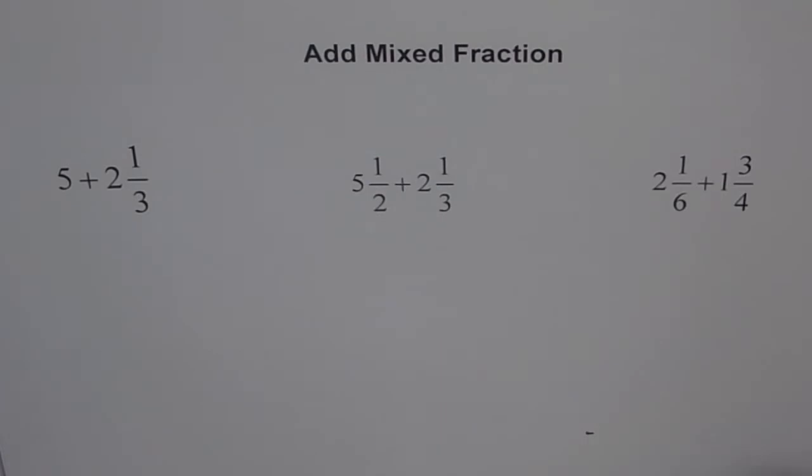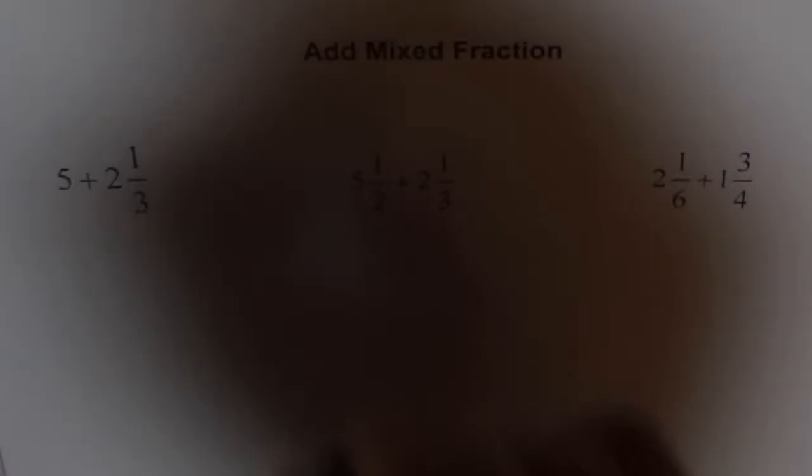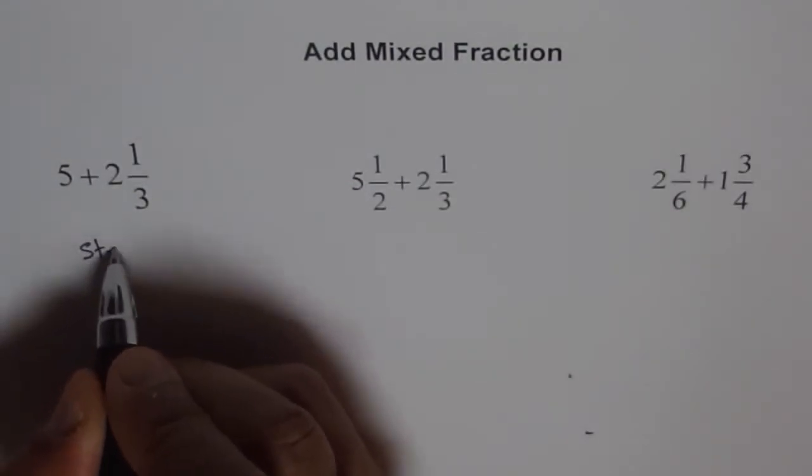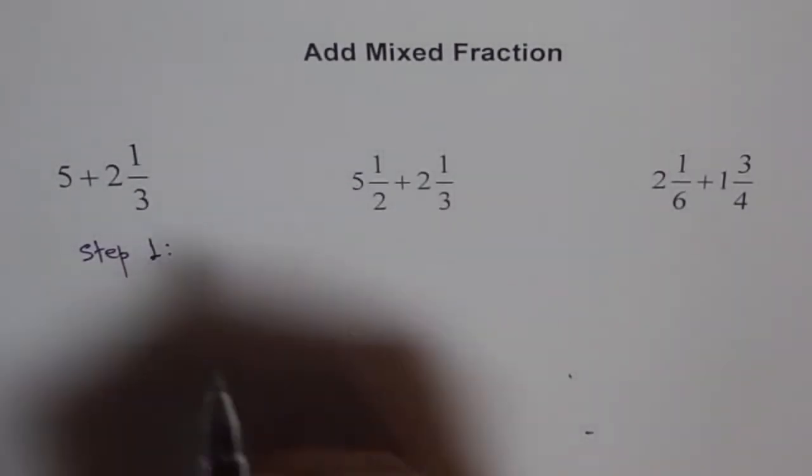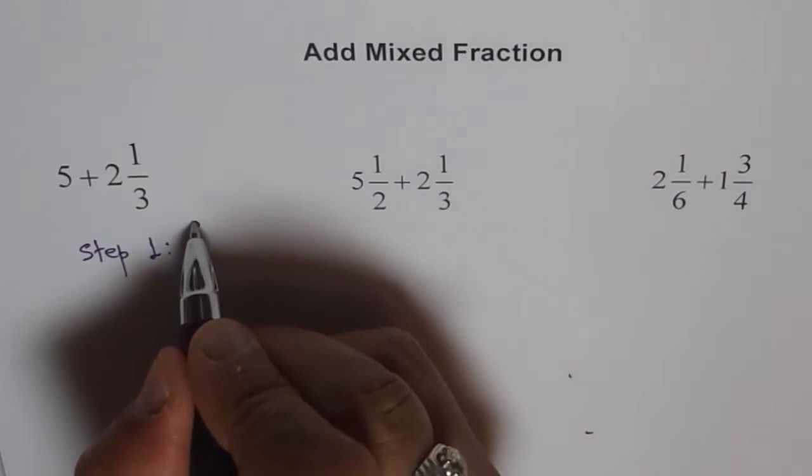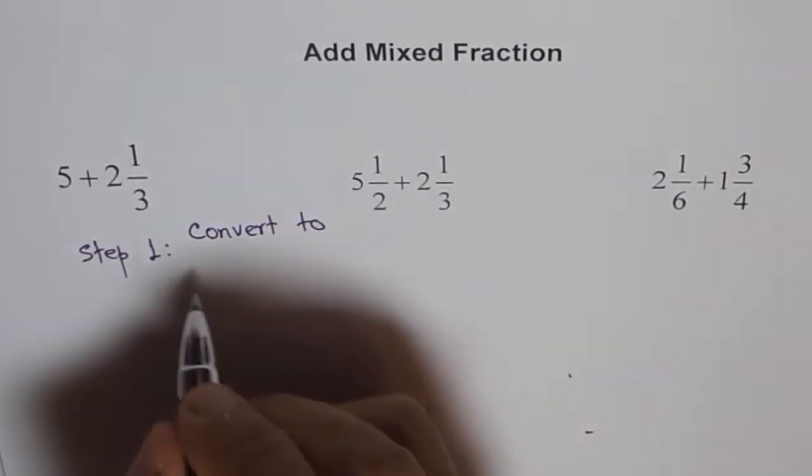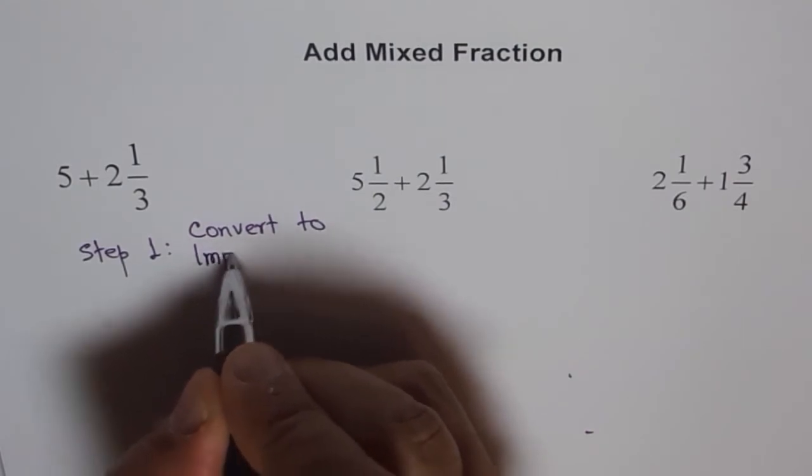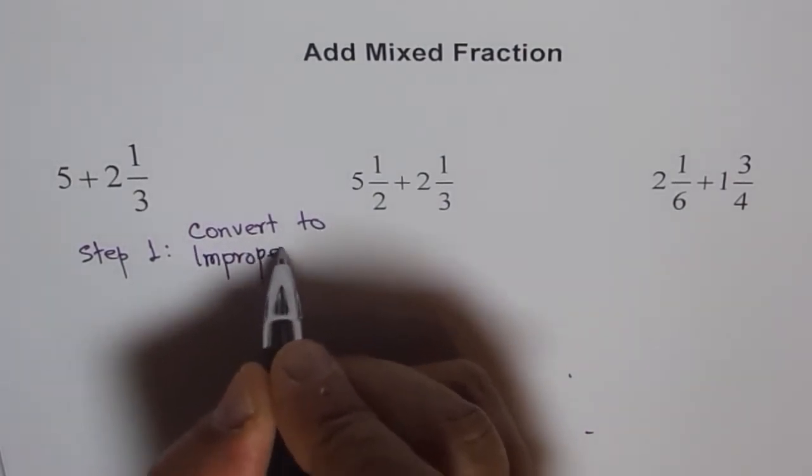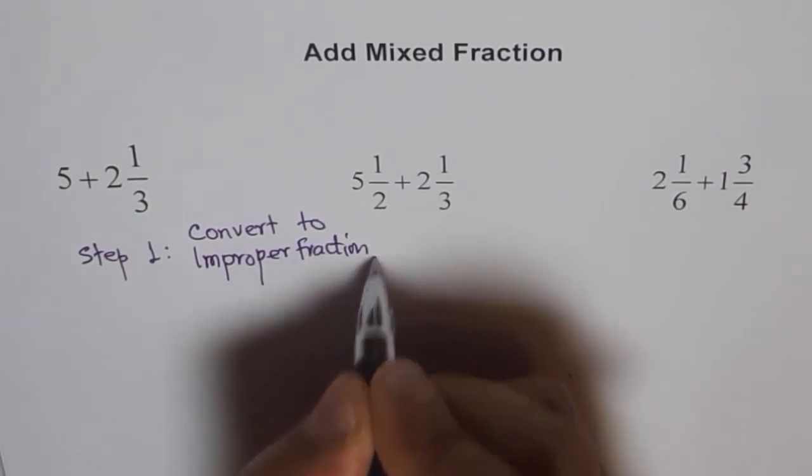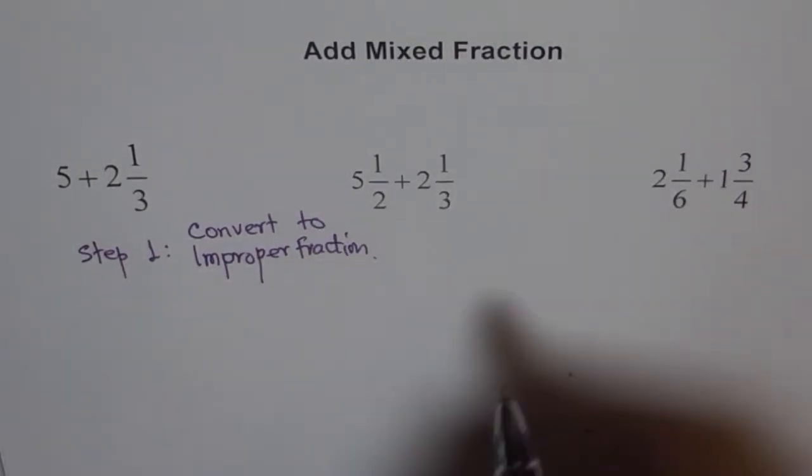So, step one for us here is, I will leave these two for you, so, therefore, I am writing here. So, we have step one, that is convert to improper fraction. So, how do you convert to improper fraction?